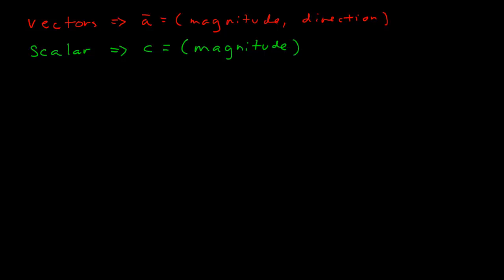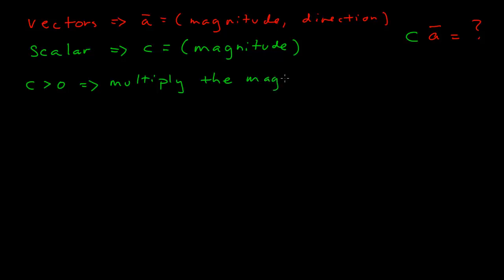Now we want to look at the case where we have a scalar multiplied by a vector and what does that give us. I want to consider this in a couple of different cases. In the first case, where our scalar is greater than zero, you multiply the magnitudes and the direction stays the same. So if c is positive, you just multiply the two magnitudes together and the direction is constant.